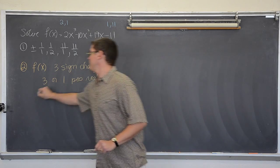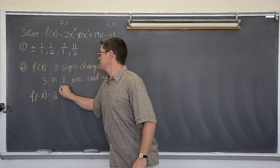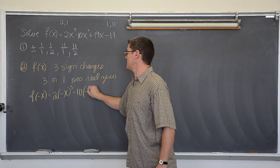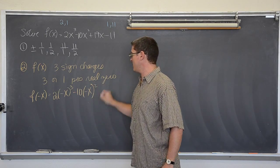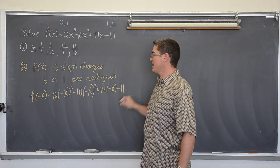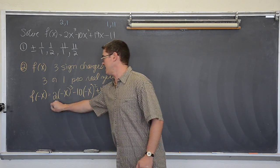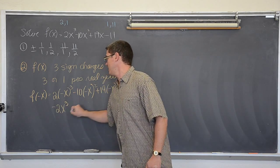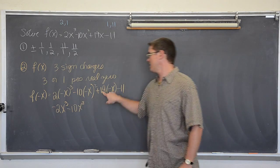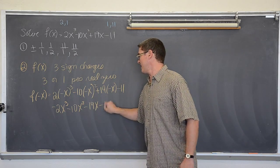So because of that I have either three or, you count down by two, three or one positive real zero. Let's try f(-x). That is going to be 2 times negative x cubed minus 10 times negative x squared plus 19 times negative x minus 11.